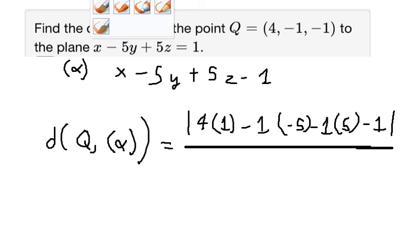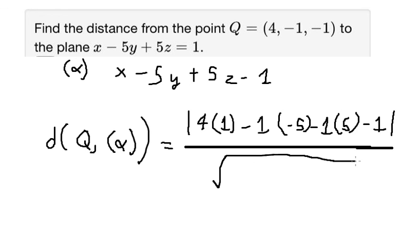We have minus one. The denominator, that is about the magnitude, so that should be about the square root of one squared plus negative five squared plus five squared.